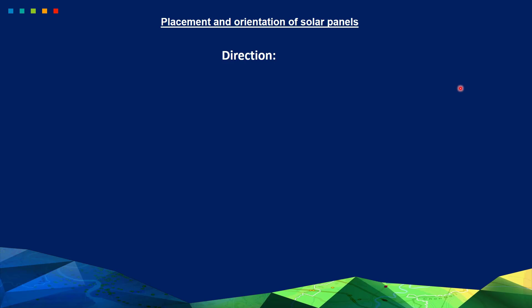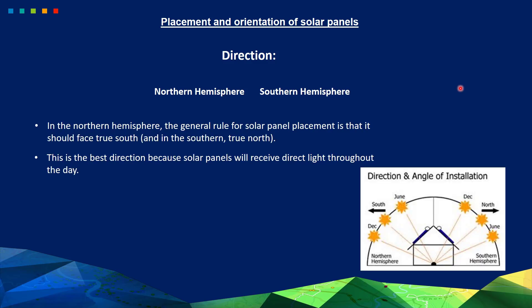The first factor which affects solar efficiency is direction. We need to decide where the site is located — whether it is in the northern hemisphere or the southern hemisphere. In our case, we will consider our site is located in the northern hemisphere. The general rule for solar panel placement is that it should face towards true south. If your site is in the southern hemisphere, it should always face true north. This is the best direction because solar panels will receive direct light throughout the day.